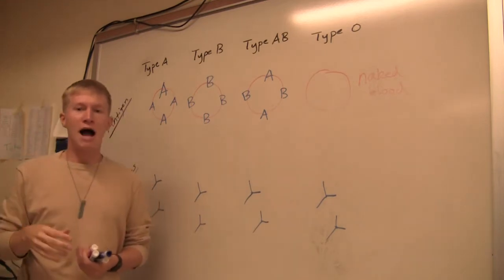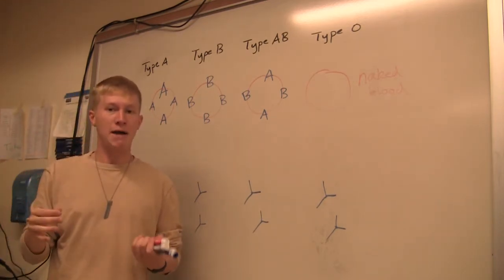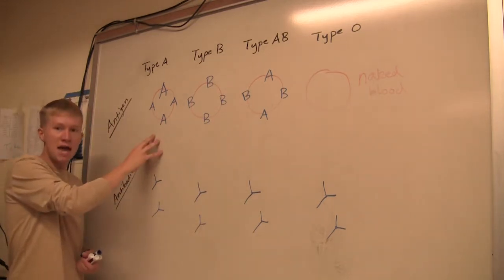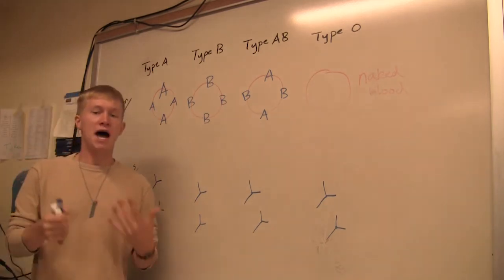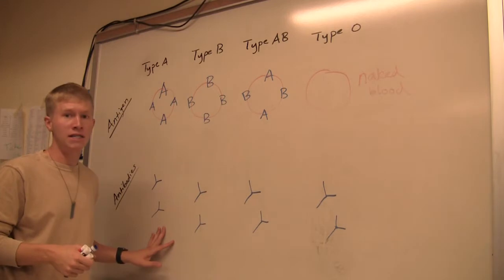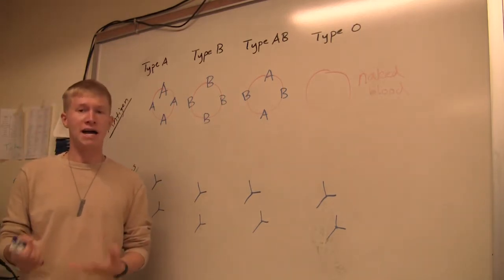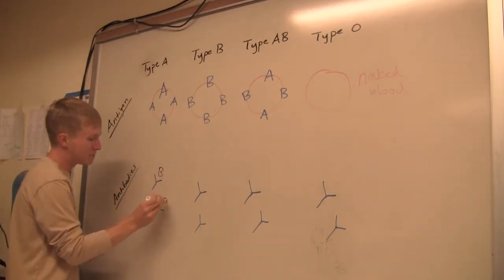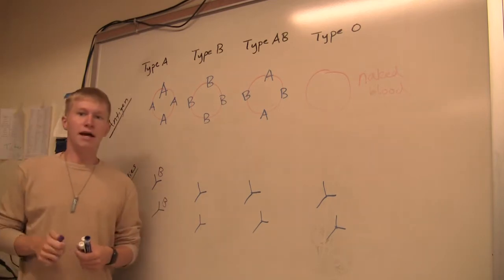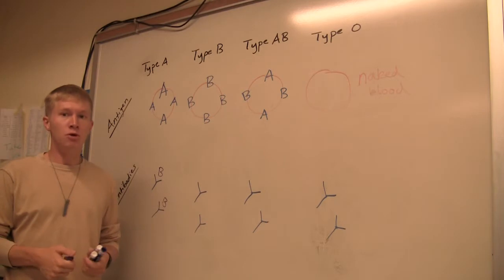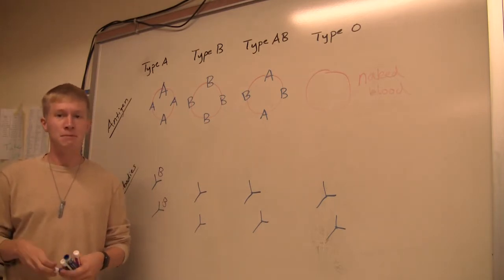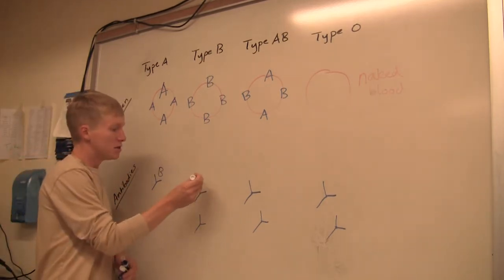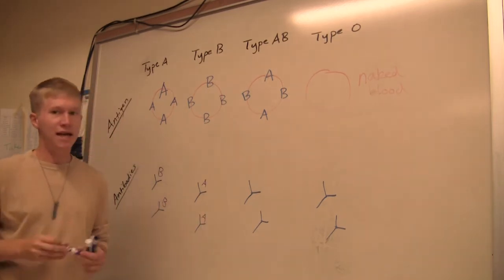The antigens are how we identify what the blood cell's type is specifically. Now we're going to get into the antibodies that are present in that blood. If you have type A blood, you would not want type A antibodies because then those antibodies would attack those cells. So type A blood is going to have type B antibodies. It's the exact inverse for type B blood. Type B blood is going to have type A antibodies.